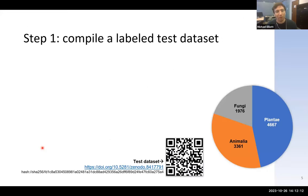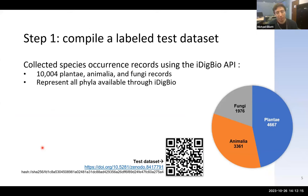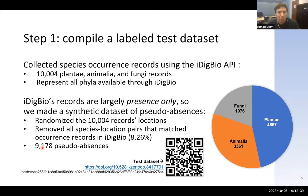The first step in our process is to compile a test dataset. We went to iDigBio and collected about 10,000 records covering Plantae, Animalia, and Fungi, trying to get an even distribution across all the different phyla available. The problem is that iDigBio is like 99% presence-only data — it doesn't tell you absences. So any model could just say yes to every question and be correct if tested only on presence records.